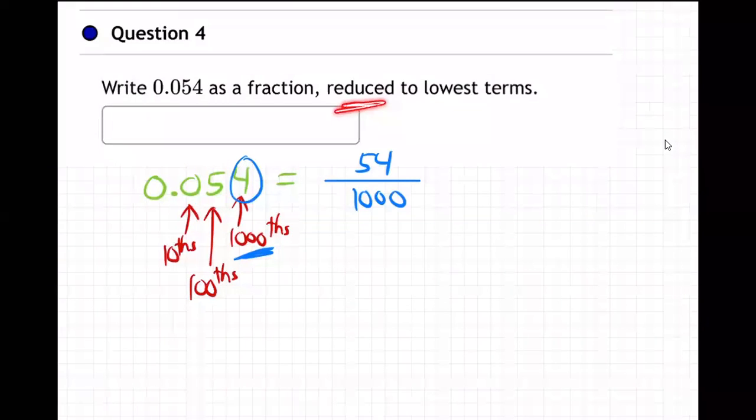So far, so good. Then we got to reduce it still. But is that making sense so far? It's all about the name of the ending place. If it goes three places... oh, and the other way you can do it is you can just count the places, and that's the number of zeros.